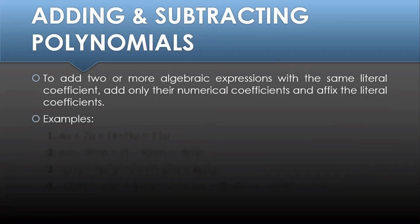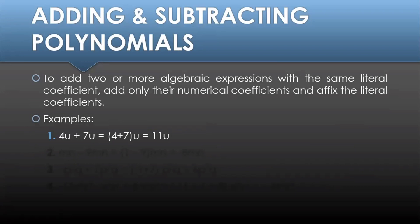For our first example, we have 4u plus 7u. Since they have the same literal coefficient, which is the variable u, let's add their numerical coefficients: 4 and 7. And 4 plus 7 will give us 11. Do not forget to affix the literal coefficient u, so the answer is 11u.